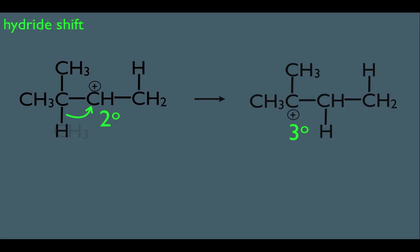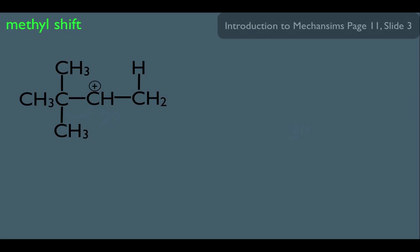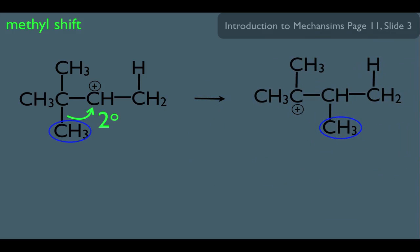We can also do something called a methyl shift. Here we're starting with a secondary carbocation, and in this case we're going to shift an entire methyl group. The arrow movement looks like this. The result of that arrow movement is this structure right here. Again, we're going from a secondary carbocation to a tertiary carbocation, so there's an incentive for this to happen. Just like the hydride shift, the two electrons in that bond are moving over to the carbon on the right and taking the methyl along with them.